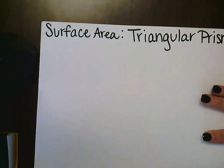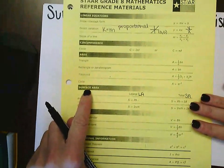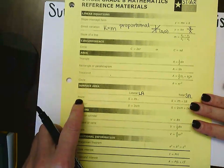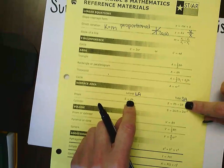If we were using our STAR chart, we'd still go down to surface area. Since triangular prism is a prism as well, we'd stop here on prism, and we're going to use the same two formulas that we use for rectangular prism.